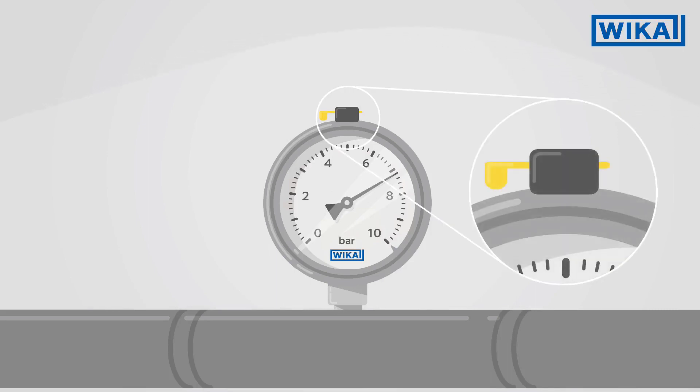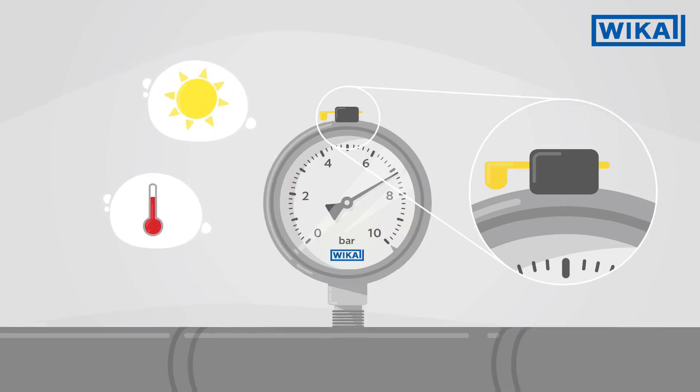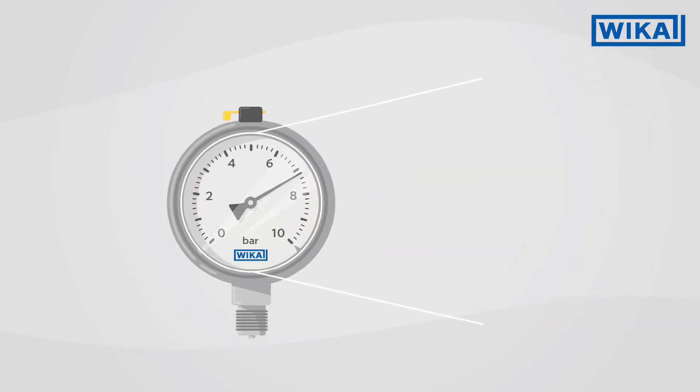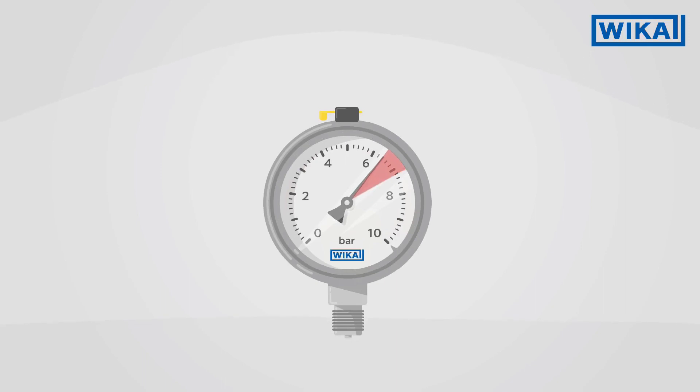With a hermetically sealed pressure gauge, temperature fluctuations, for example with direct sunlight, can mean that the internal pressure in the case is altered. This pressure change in the case has an effect on the measuring system and distorts the displayed measuring result.